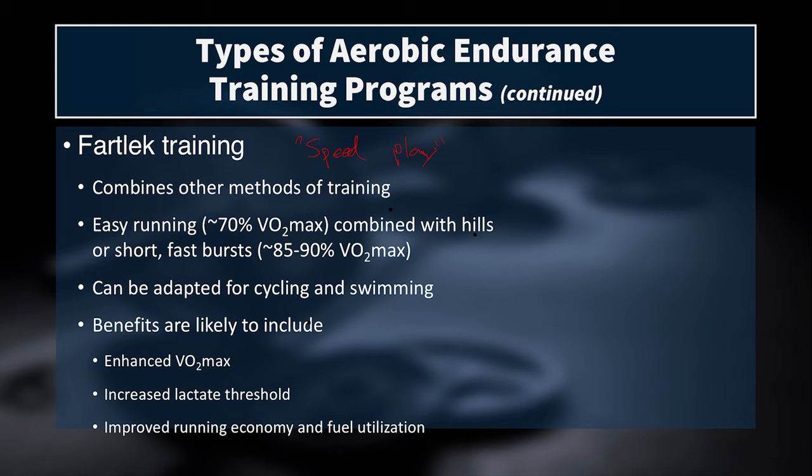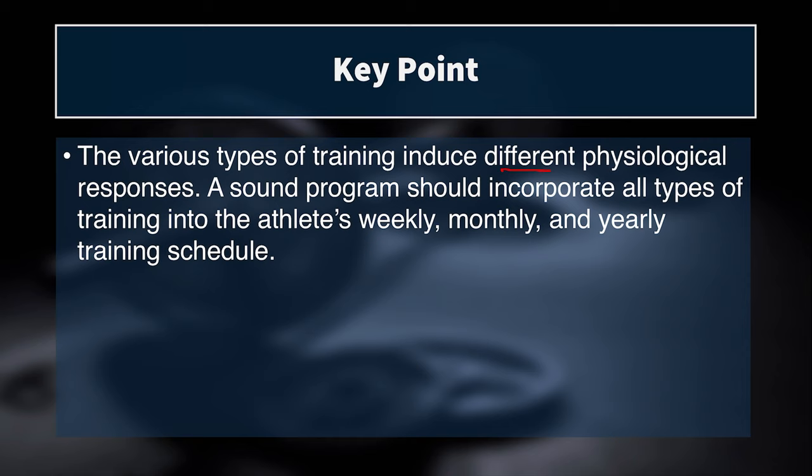The key point is that the various types of training induce different physiological responses, and a sound training program should incorporate all types into the athlete's weekly, monthly, and yearly schedule. This doesn't mean incorporating all of them every week — we should have a phasic, structured program getting more sport-specific over time. Of course, you also want hill sprints, sprint training, weight training, and plyometrics as important supporting elements.